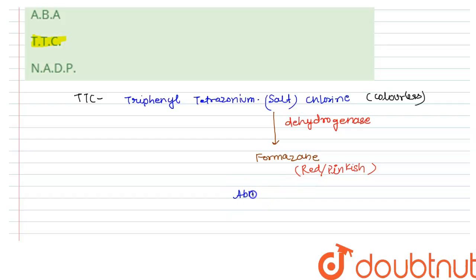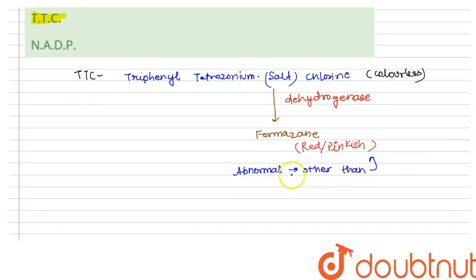But what happens if another color is obtained? For example, if you obtain yellow or bluish color, any abnormal color other than these two colors, this means that the seed is very weak. Very less amount of dehydrogenase is present in that seed and that seed may or may not be viable depending upon the conditions it will be provided with to grow and germinate.